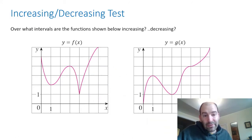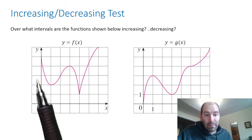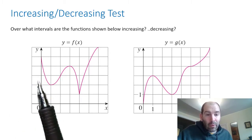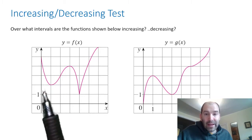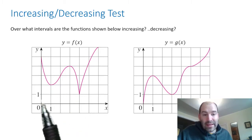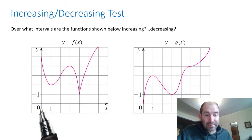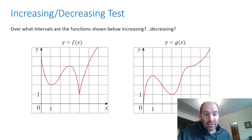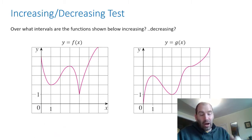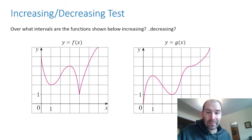That's how you see if a graph is increasing or decreasing. You just ask: is the graph going down or up as I move from left to right? If it's going down, it's decreasing. Going up, it's increasing. So as you move from left to right, up is increasing and down is decreasing.